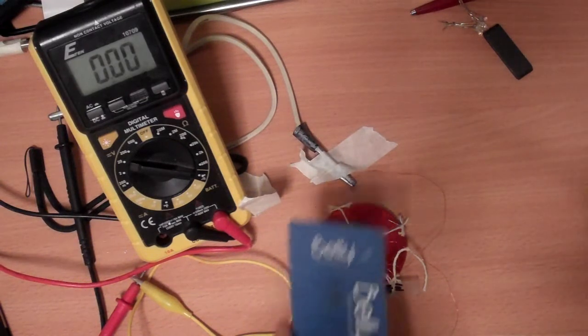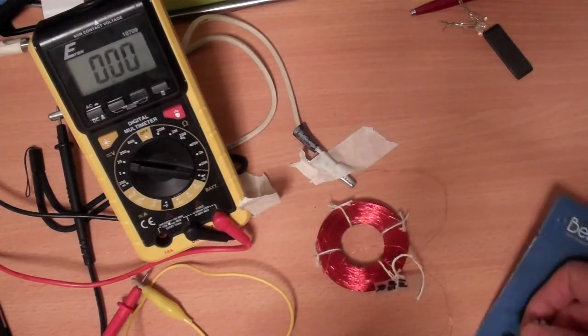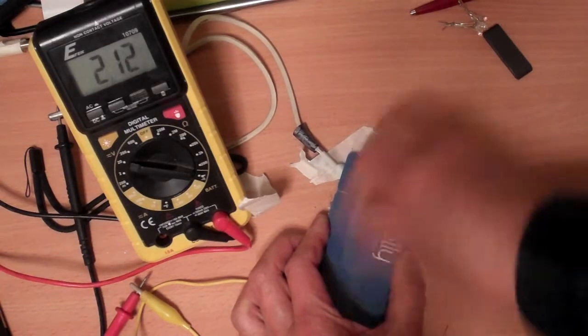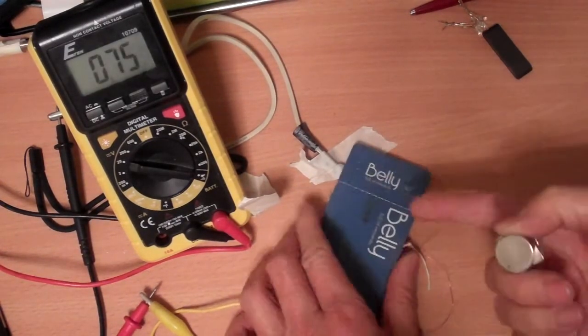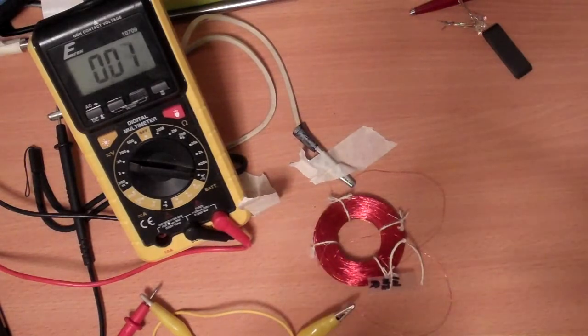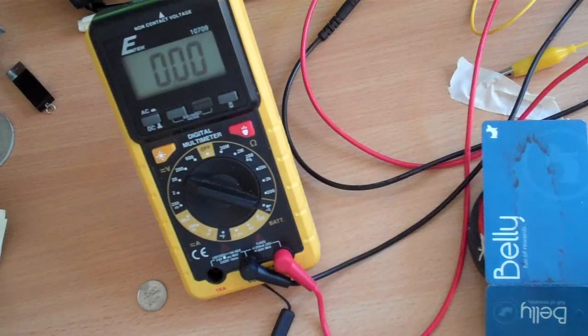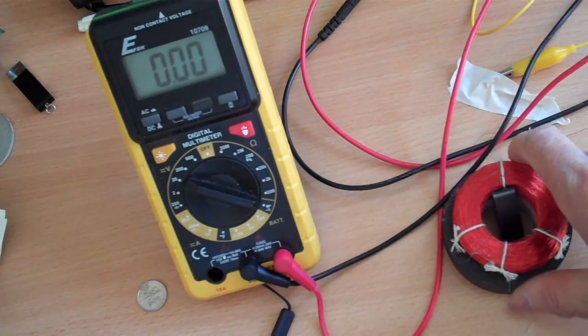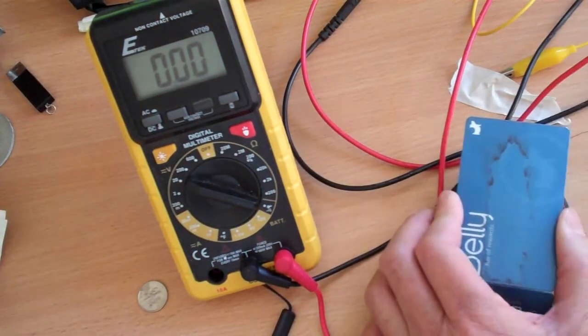So this is the voltage I will get with the wound coil, about three volts without the iron core. Okay, I put the iron piece inside and I'm gonna run the magnets over it again.